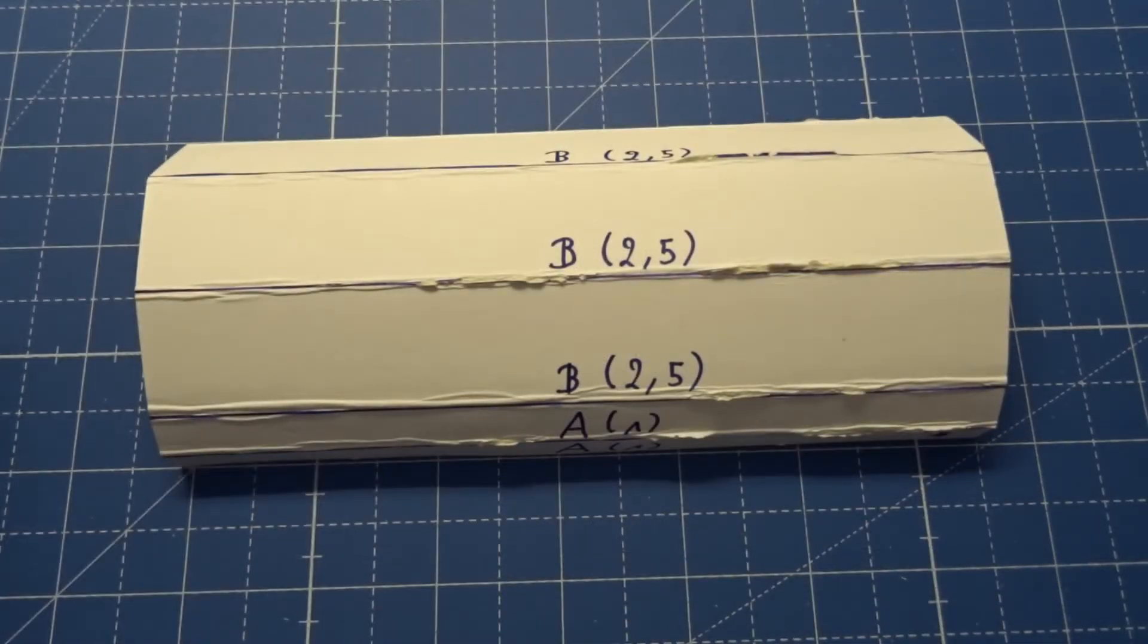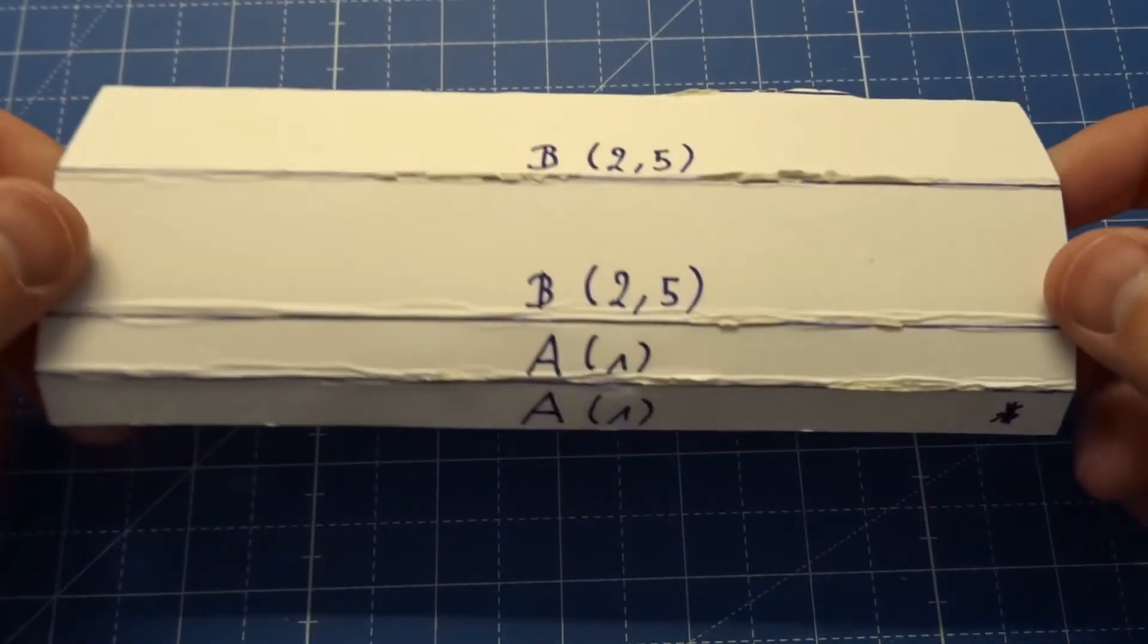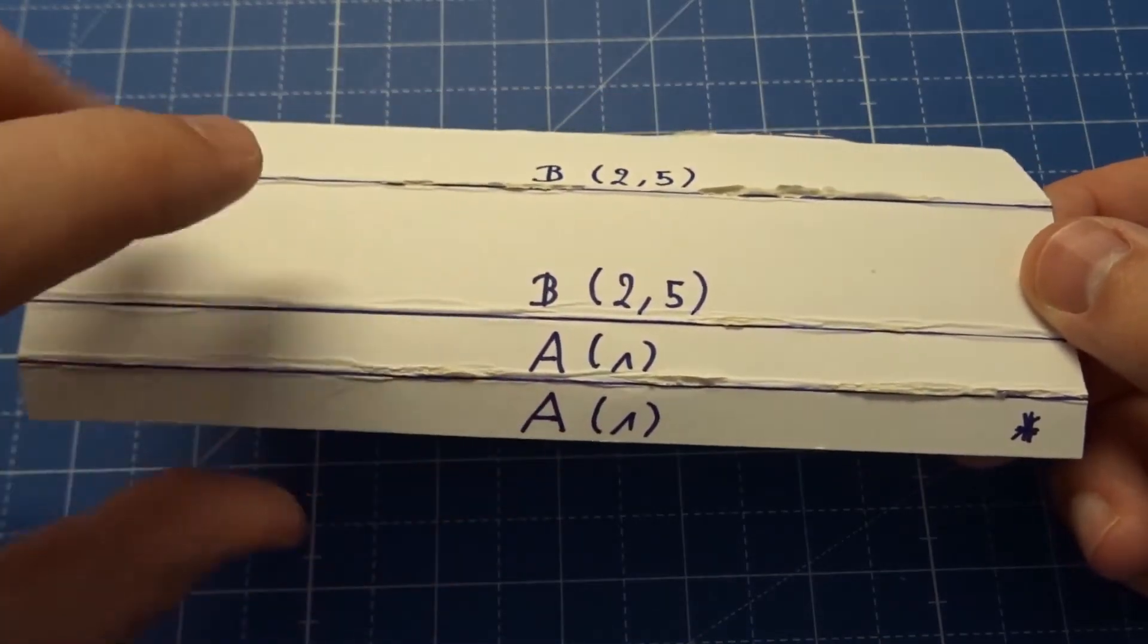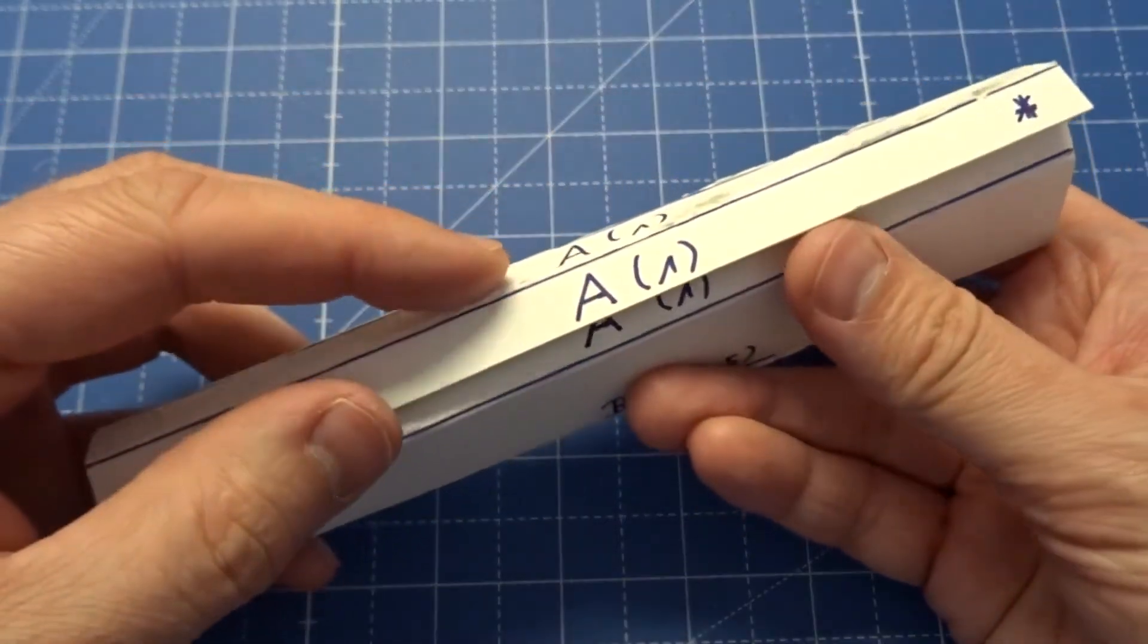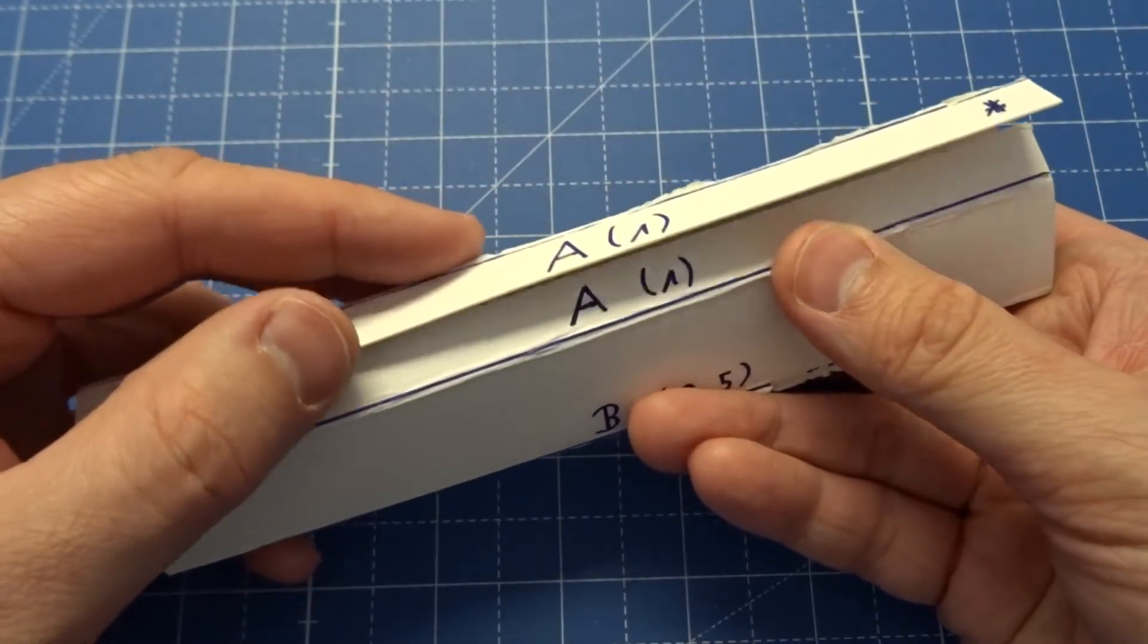After folding the cardboard along the lines, you put glue at the back of the A area that is marked with a star, and you glue it on top of the upper A area like this.